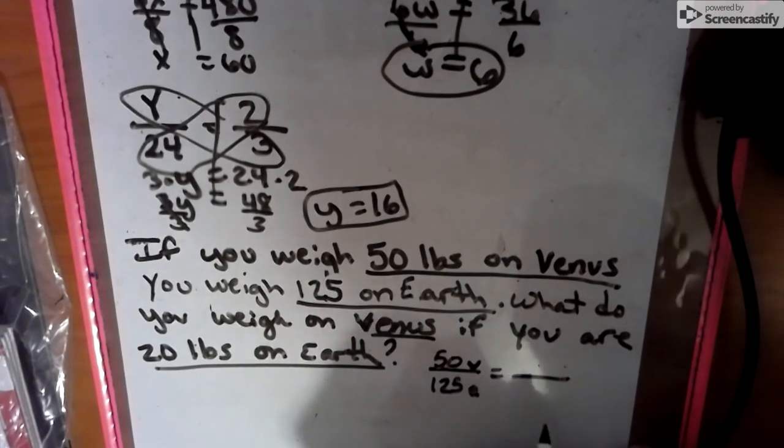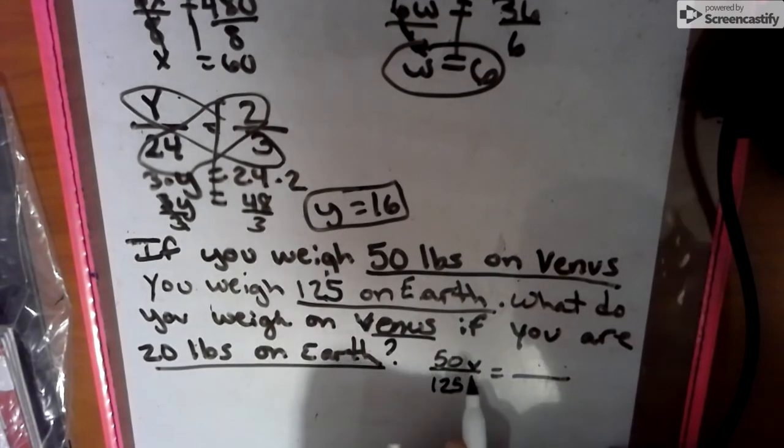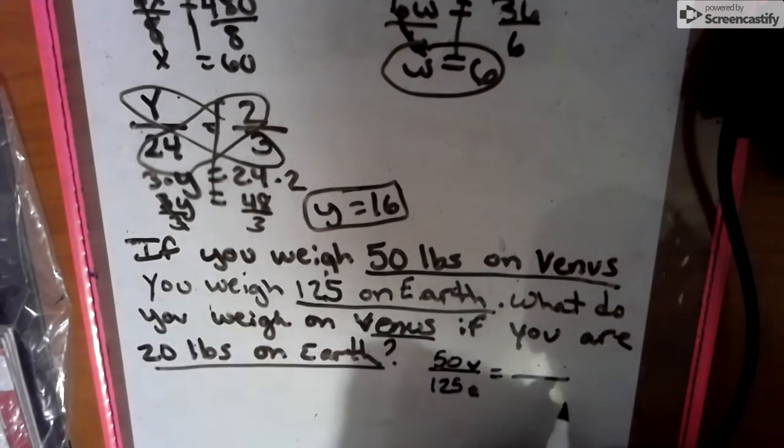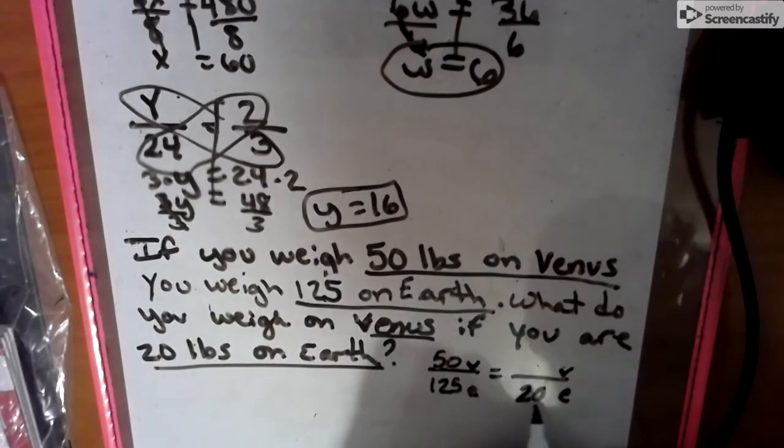So then we look, is Earth on top or is Earth on the bottom? And we have 50 is Venus. That's the top. Earth is the bottom. So we are in a ratio of Venus to Earth, Venus to Earth. So we put the 20 on the bottom because it goes with the Earth. Now, there's lots of ways to make proportions.